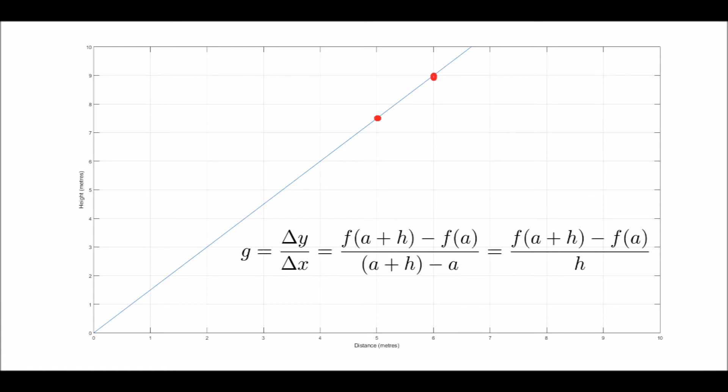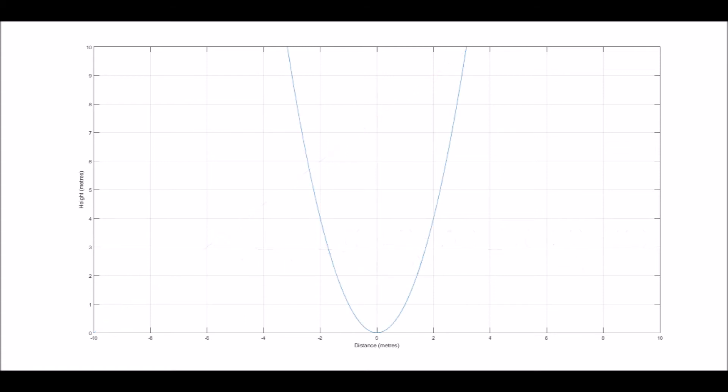So we've now got a general way to find the gradient of a straight line. But what if the line is curved like this? Well if we pick our point A and h, then we'll find the gradient of a straight line between these points. But this clearly, you can see, isn't the gradient at either point A or point B. The line lies close to, but not along the curve, as you can see from these two points here.